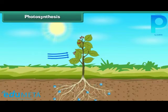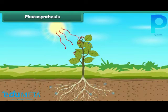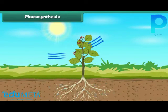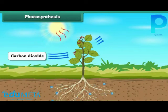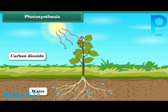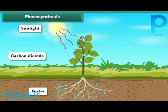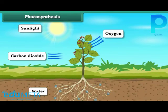Plants make food in their leaves by means of a process called photosynthesis. Leaves of a plant prepare food by converting the carbon dioxide absorbed from air and water absorbed from soil into glucose in the presence of sunlight. Oxygen is released during photosynthesis.